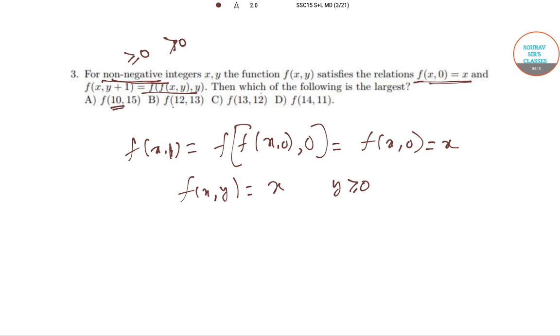Anyway, f(x, y) is x, so the first value is 10, second value is 12, third is 13, fourth is 14. So the maximum value will be this.